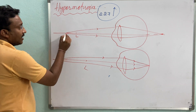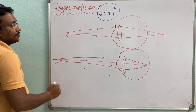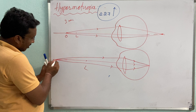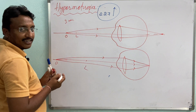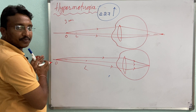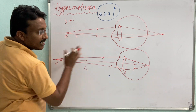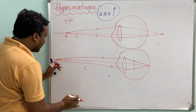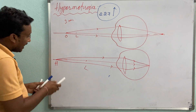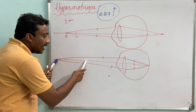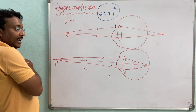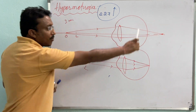When the object is at the least distance of distinct vision, the image is formed clearly on the retina. If the object is present behind that point, the image is formed on the retina. But if the object is located between the extreme point H and the least distance of distinct vision L, the image is formed behind the retina. If the object is behind H, the image is formed properly on the retina.